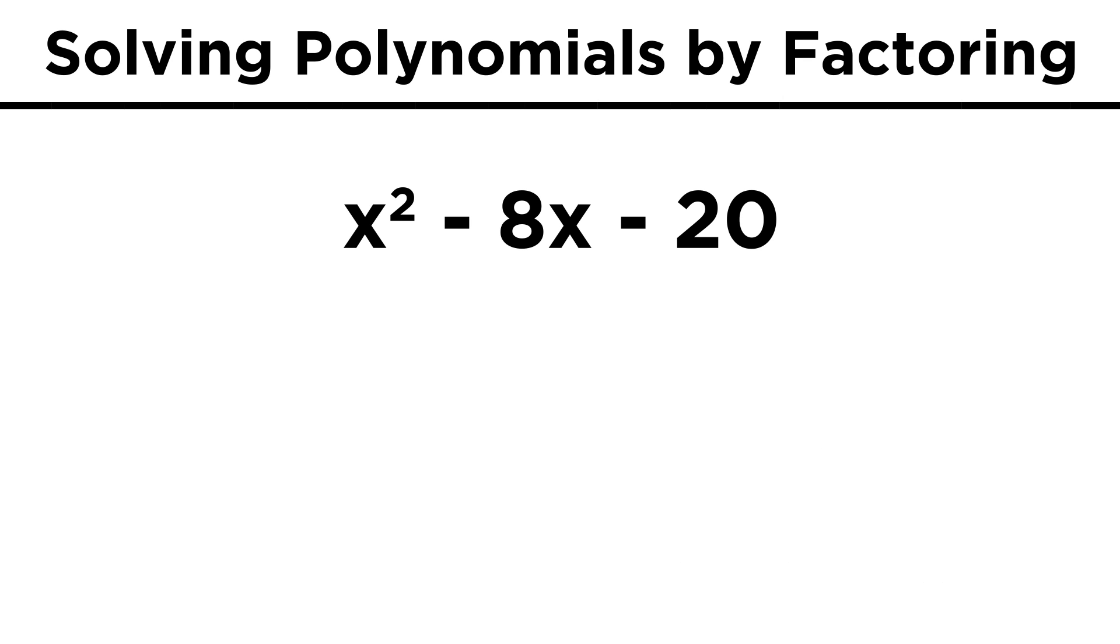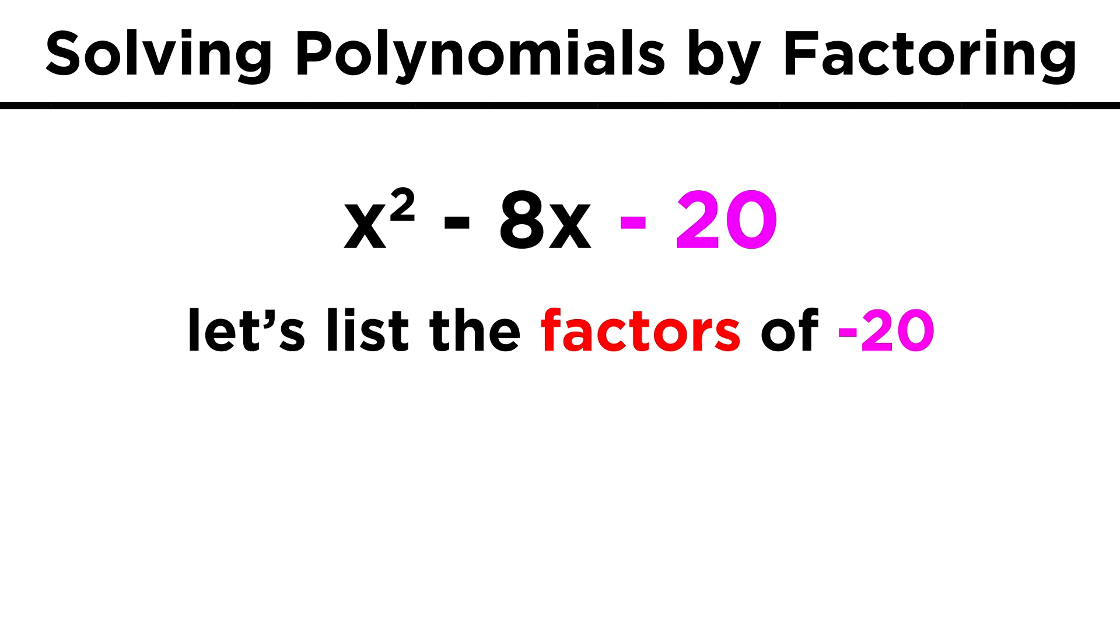Let's try another, x² - 8x - 20. Just like before, we always start by listing the pairs of possible factors for the c term.